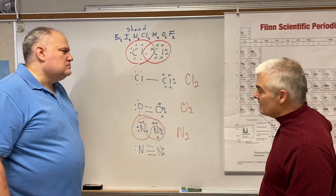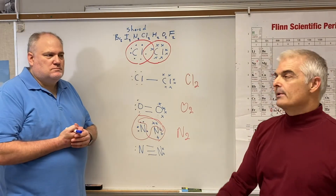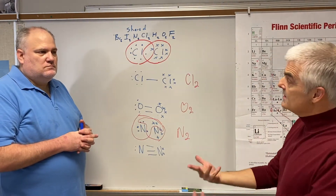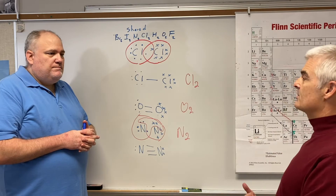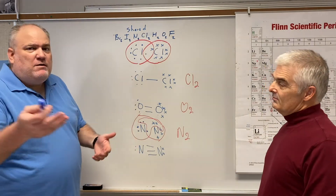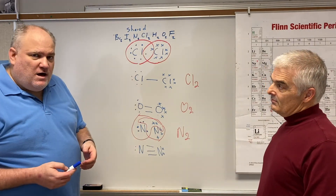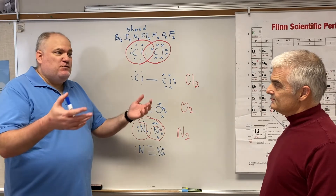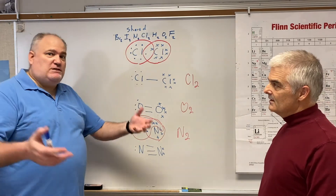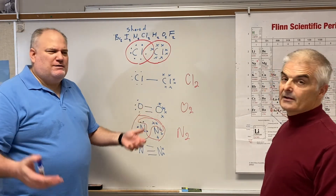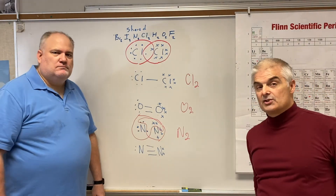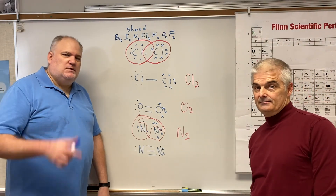So if you're ever asked to react with oxygen or chlorine, you never write Cl — you write Cl2, or Br2, or whatever it might be. Even outside of chemistry, when you think of oxygen, it's always O2. You never say 'give me some O' — it's O2. Alright, we'll catch you on the next video.